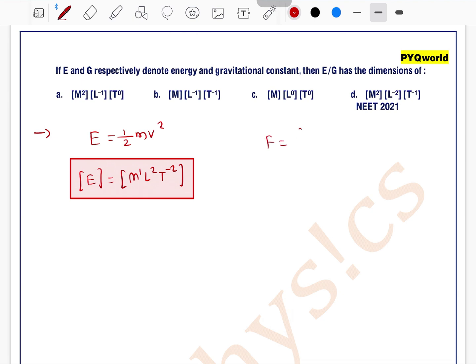We can use Newton's law of gravitation, G m₁m₂ divided by r², to find the dimension of G. G can be written as Fr² divided by m₁ times m₂.